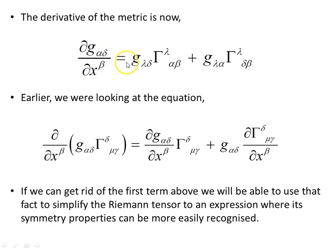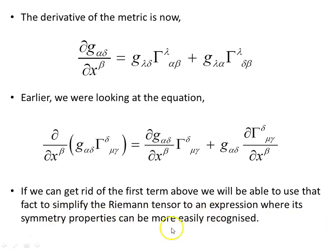Restating the result: if we could eliminate the term involving the partial derivative of the metric times the affine connection from our expression, we would be able to simplify the Riemann tensor into a form where its symmetry properties can be more easily recognised — which is exactly what was done in the video on the symmetry properties of the Riemann curvature tensor.